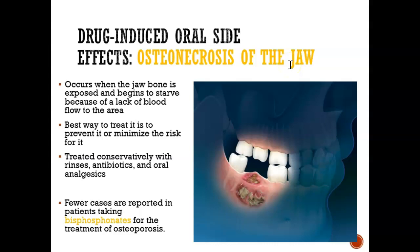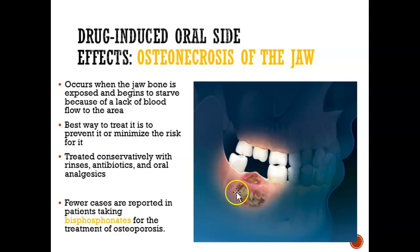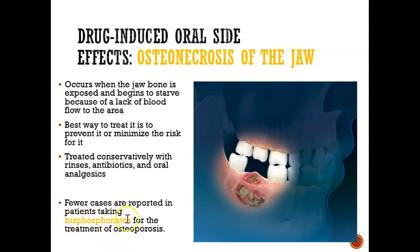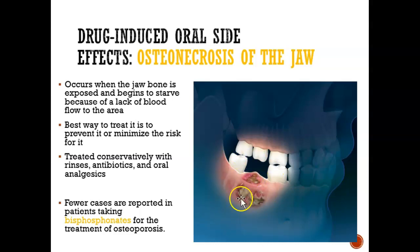Osteonecrosis of the jaw is when you don't have enough blood flow in the area and you get necrosis — the eating away of the bone. The best way to treat it is to give them proper rinses, antibiotics, and pain-relieving medication. This can happen as a side effect in some people who take bisphosphonates. If this happens, they may have to go through jaw surgery where a new jaw is implanted.